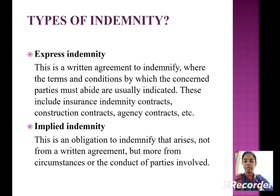Types of indemnity. Express indemnity: this is a written agreement to indemnify where the terms and conditions by which the concerned parties must abide are usually indicated. These include insurance indemnity contracts, construction contracts, agency contracts, etc. Implied indemnity: this is an obligation to indemnify that arises not from a written agreement but from circumstances or the conduct of the parties involved.